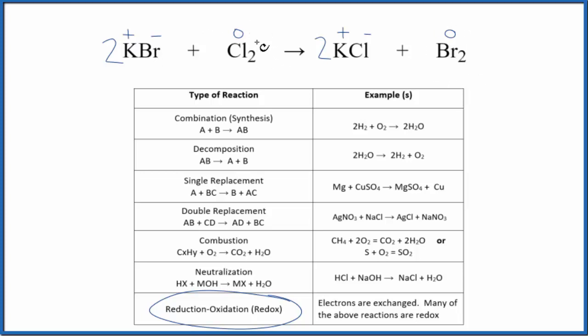The chlorine, it's a free element, so it starts out as zero, ends up as Cl minus. It gained that electron, so it's been reduced. So this is an oxidation reduction where electrons are exchanged.